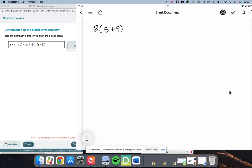And they're asking us to rewrite that, having used the distributive property. And so your past experience with the distributive property probably goes something like this. Multiply the 8 by the 5, multiply the 8 by the 9, that gives you 40 plus 72.